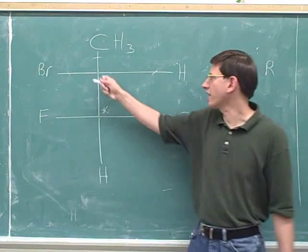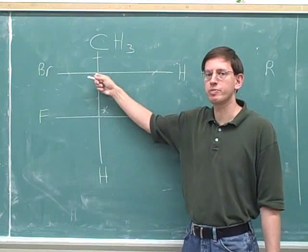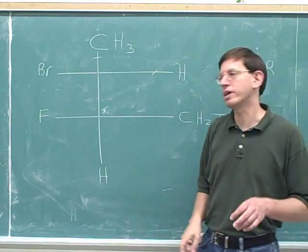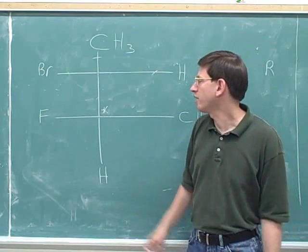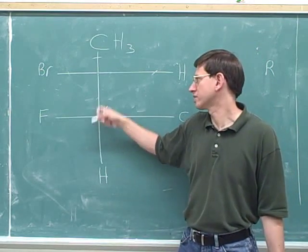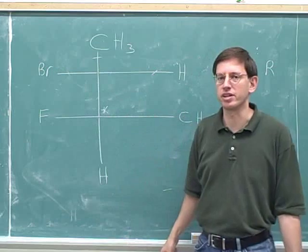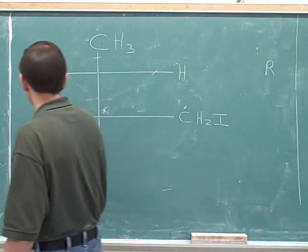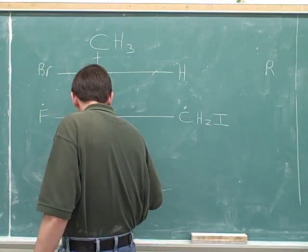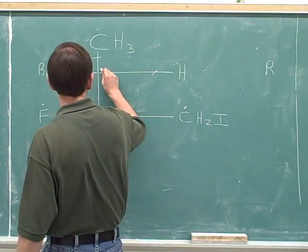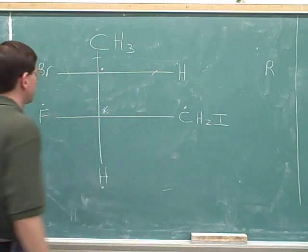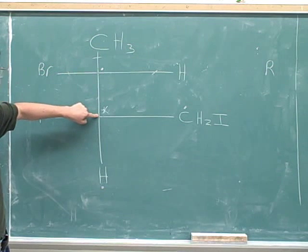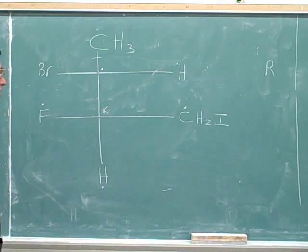I've erased the asterisk at the top stereocenter and drawn in an asterisk at the bottom stereocenter to remind myself that now I'm focusing on this bottom stereocenter. We're done with the top stereocenter. Let's put dots in for the four atoms that are directly connected to the bottom stereocenter. Don't forget to put a dot up here because this atom is also directly connected to this stereocenter.